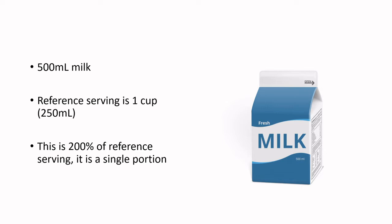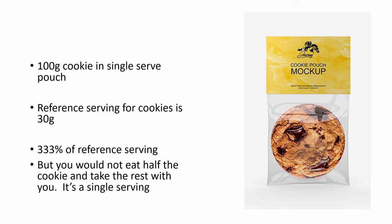Here's one example, similarly explained in the CFIA's document. A carton of milk is 500 mL. The reference serving for milk is one cup or 250 mL, so 500 mL is 200% of the reference serving. Therefore this carton of milk would be classed as a single portion. It would also be considered that this carton would be routinely bought as a convenience item — such as at commissaries or quick-service restaurants — and consumed in one full serving.